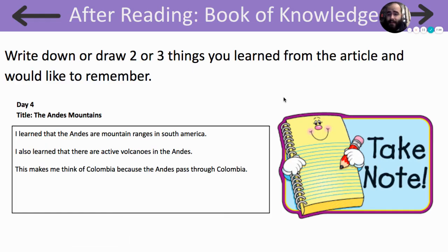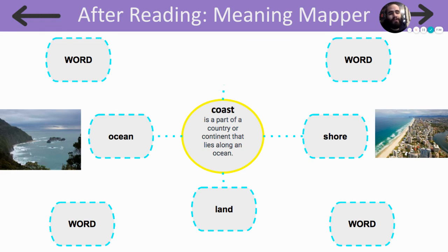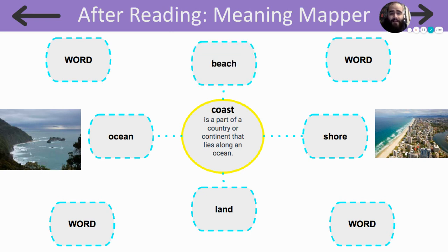The last thing I want to do is go back to our focus word, coast. We've had this meaning mapper for the whole week. Some of the words we've added so far are shore, ocean, and land, because they're all related to the word coast. The word I added today was beach, because beach is like the coast — it was one of the words we picked at the beginning.